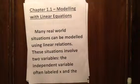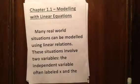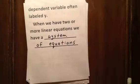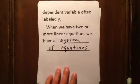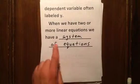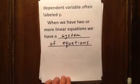This lesson is on modeling with linear equations. Many real-world situations can be modeled using linear relations or linear equations. These situations involve two variables: the independent variable often labeled x, and the dependent variable often labeled y. When we have two or more linear equations, we have a system of equations. The term system of equations refers to two or more equations — they don't necessarily have to be linear.